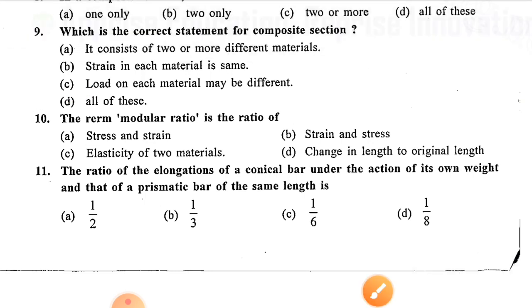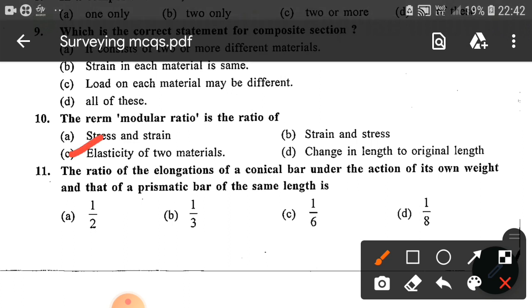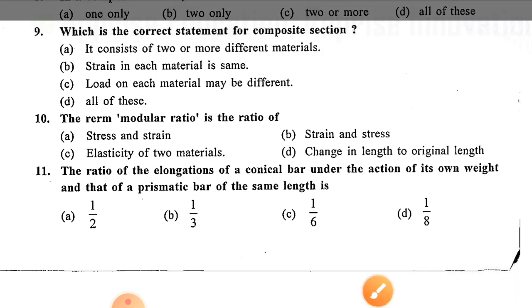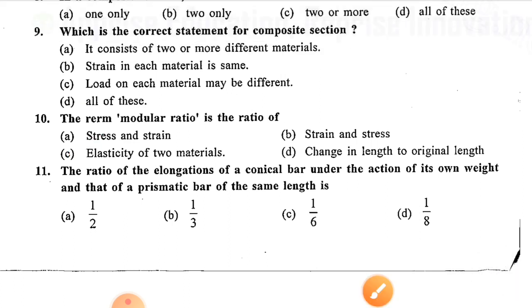Question number ten: The modular ratio is the ratio of — option C is correct — elasticity of two materials. Question number eleven: The ratio of the elongation of a conical bar under the action of its own weight to that of a prismatic bar of the same length is — option B is correct — one by three (1/3).